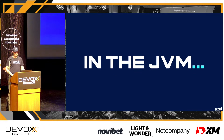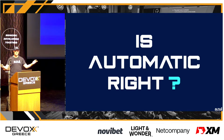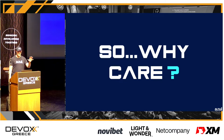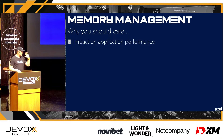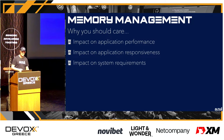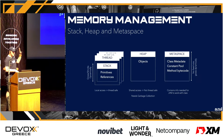Memory management in the JVM is automatic, right? So why care? Who cares about garbage collection? Memory management is important because it has a real impact on application performance, on the responsiveness of your application, and also on the system requirements when you run your application. This is how it works in the JVM in a very simple schema.